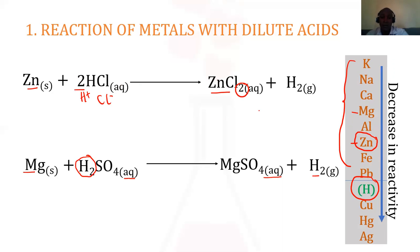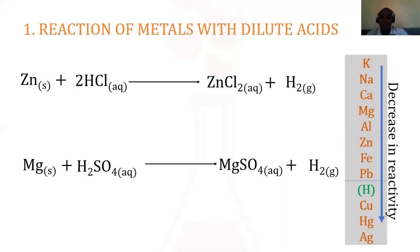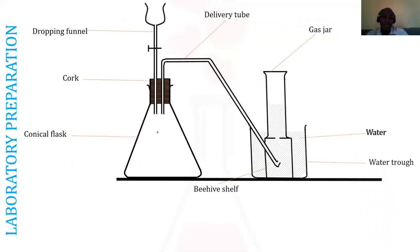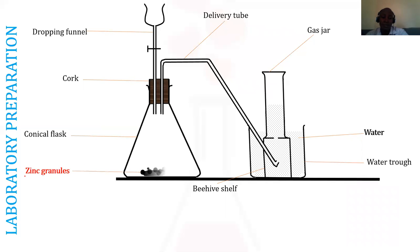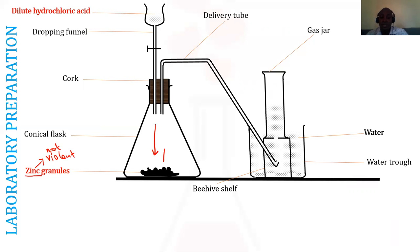In preparing hydrogen from dilute acids and metals, we mainly use zinc granules because zinc is relatively cheap and not highly violent when reacting with the acid. When we add dilute hydrochloric acid and open the tap, the acid reacts with the zinc granules and we see bubbles of a colorless gas. We collect our hydrogen over water because it is slightly soluble in water.